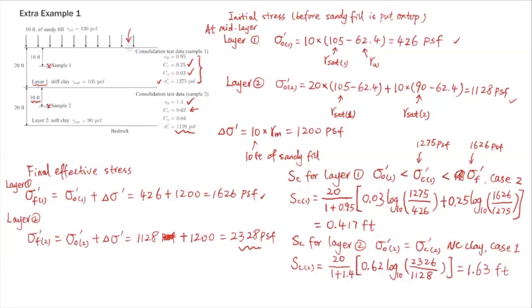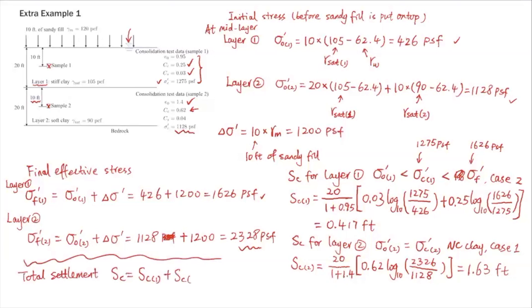Now we have the primary consolidation settlement for both layers. The total settlement due to primary consolidation is simply the sum: Sc_total = Sc1 + Sc2 = 0.417 + 1.63 ≈ 2.05 feet. This is the total primary consolidation settlement of the two-layer soil profile.